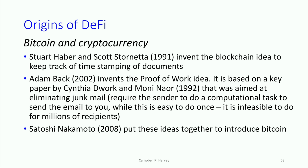A number of people were working on this — Dwork and Noor also in 1992 — it was a big problem. These two ideas: doing some work before you send the email so that the email becomes costly — a very low cost for one, but a high cost for millions — and this idea of a blockchain, were joined in the famous white paper by Satoshi Nakamoto in 2008, and Bitcoin was introduced.